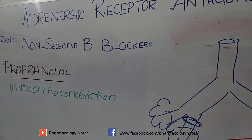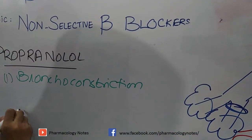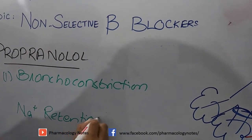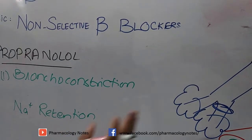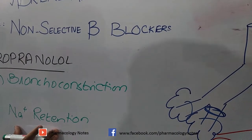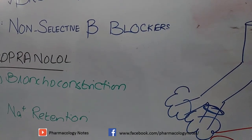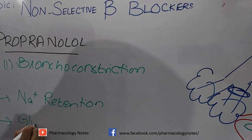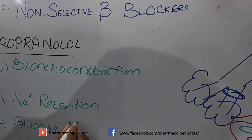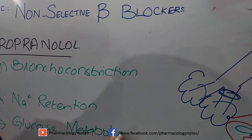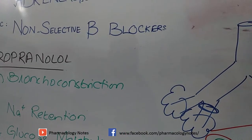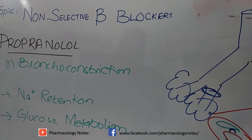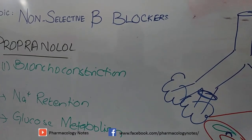Propranolol also causes sodium retention. Since blood supply to the kidney and juxtaglomerular apparatus is decreased, sodium is retained along with fluid in the body. The next action is disturbance in glucose metabolism, which is disturbed with propranolol use. This topic will be discussed in the next lecture, so stay tuned and watch the next video.